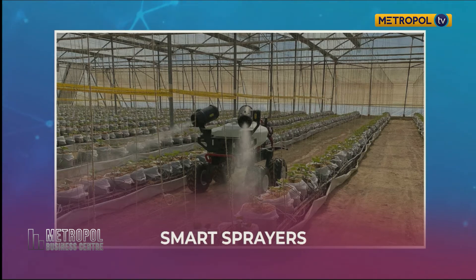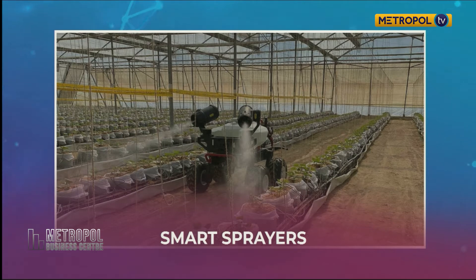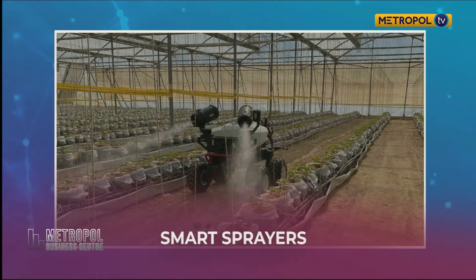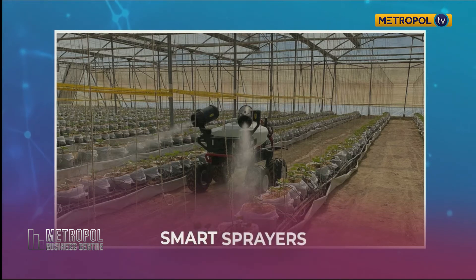Contamination can be related to run-off after application, discharge from drainage, and off-target deposition of spray due to wind or spray drift. This contamination can be significantly reduced through optimization of spraying technology. Spray drift of agrochemicals occurs during every application and accounts for a loss of up to 50 percent of agrochemicals used — minimizing these negative impacts is a major global challenge.